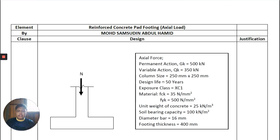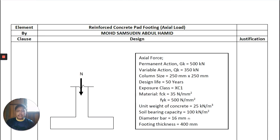The design life is 50 years, exposure class XC1, material f_ck = 35 N/mm², f_yk = 500 N/mm², unit weight of concrete 25 kN/m³. The soil bearing capacity is needed to determine the size of the footing, and it is obtained from soil investigation for that area. Diameter bar is 16 mm and footing thickness is 400 mm.